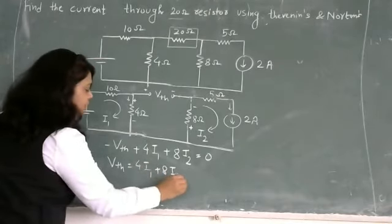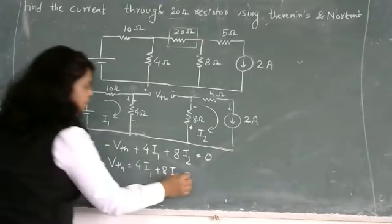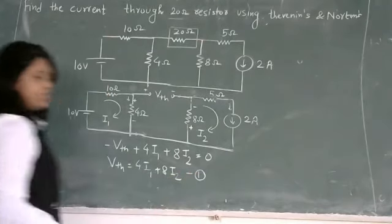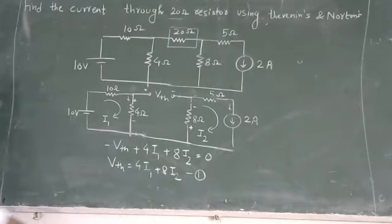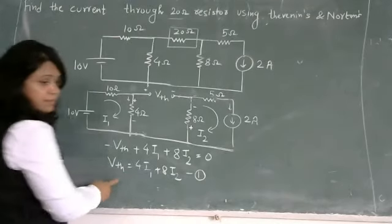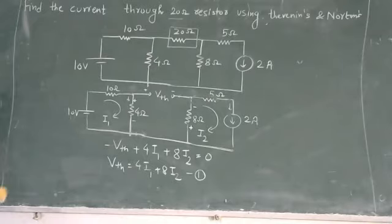Put the value of i1 and i2 in equation number 1 and finally value of VTH. Find the value of VTH.